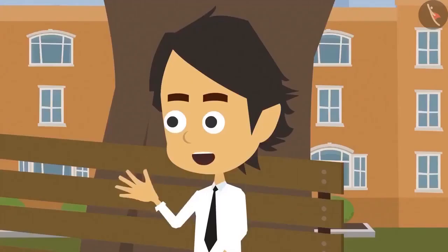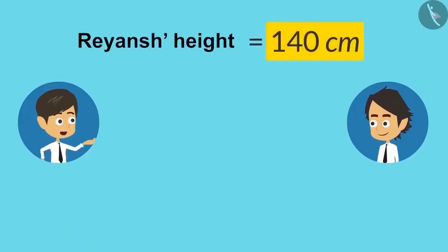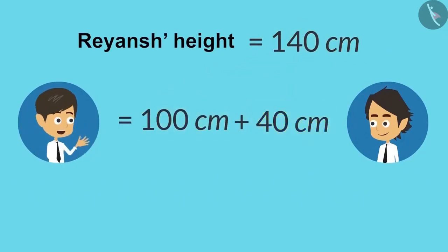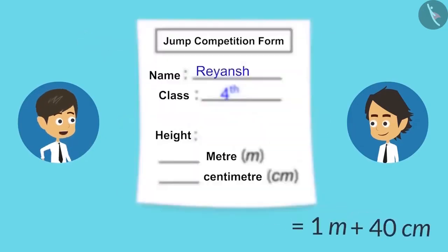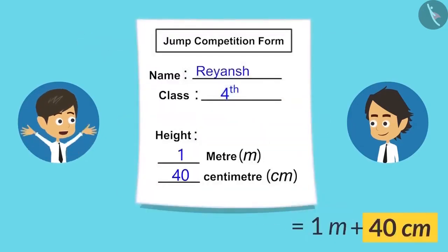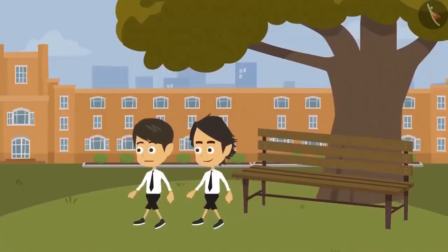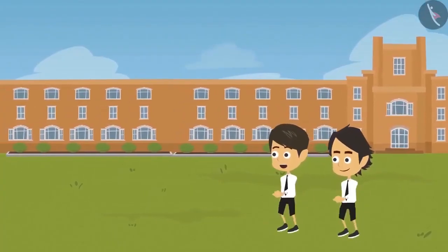Reyanj also converts his height: 140 centimeters equals 100 + 40 centimeters, which is 1 meter 40 centimeters. The form is filled and they go to give it to the teacher.